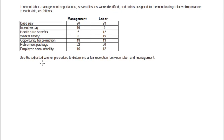In recent labor-management negotiations, several issues were identified, and points assigned to them indicating relative importance to each side as follows. Use the adjusted winner procedure to determine a fair resolution between labor and management.